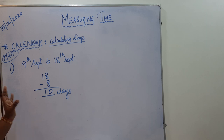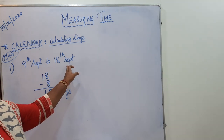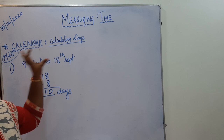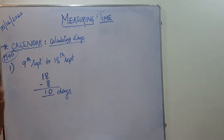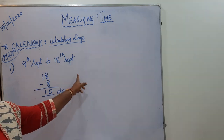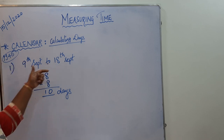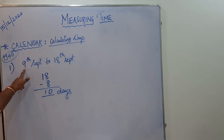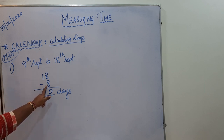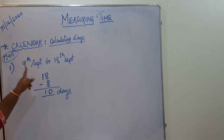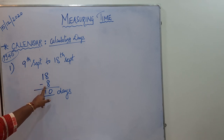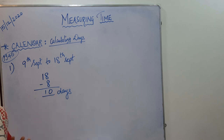The steps are: first, write the given dates. Second, check whether both dates are in the same month. If same month, simply subtract — place the bigger number on top and subtract the starting date minus one. So if it starts on 9th, write 8; if 7th, write 6; if 5th, write 4. 18 minus 8 equals 10 days.